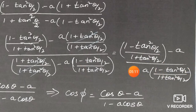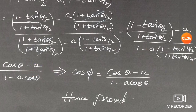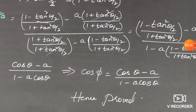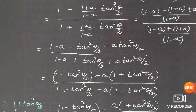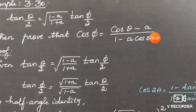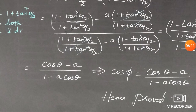Now, by the half-angle identity, (1 - tan²(θ/2)) / (1 + tan²(θ/2)) = cos θ. Applying this identity: cos φ = (cos θ - a) / (1 - a·cos θ). This is exactly what we needed to prove. Hence proved. cos φ = (cos θ - a) / (1 - a·cos θ). Thank you.